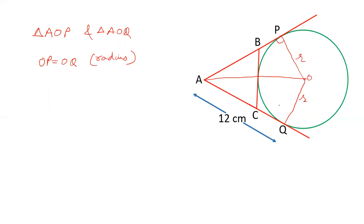Angle P and angle Q are 90 degrees. They are perpendicular. The radius is perpendicular to the tangent, that is a property of the circle. The radius from point of contact is perpendicular to the tangent. And OA is common in both triangles. Therefore, triangle AOP is congruent to triangle AOQ, and therefore we can say that AP is equal to AQ.